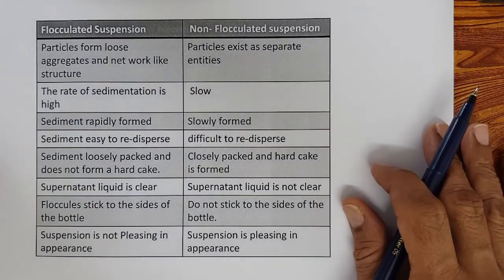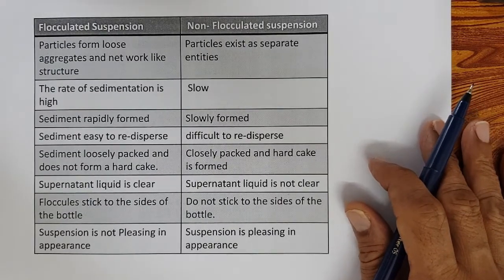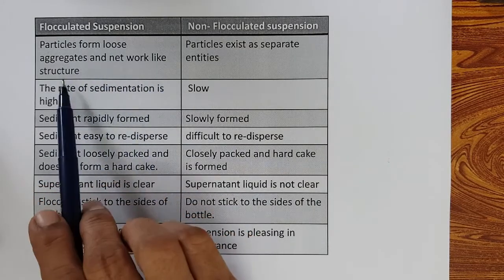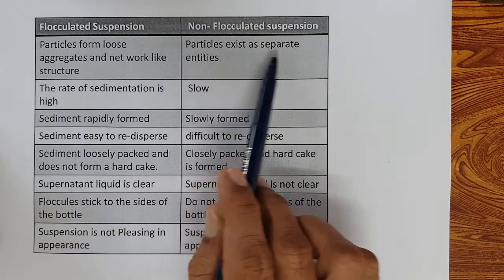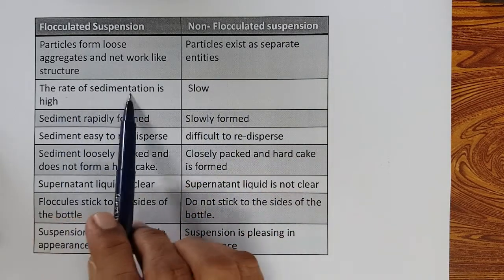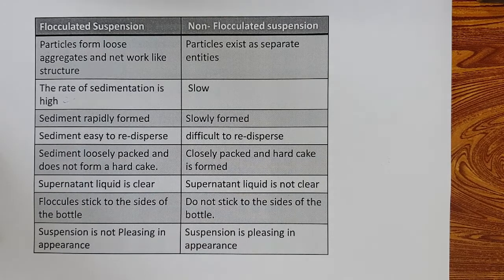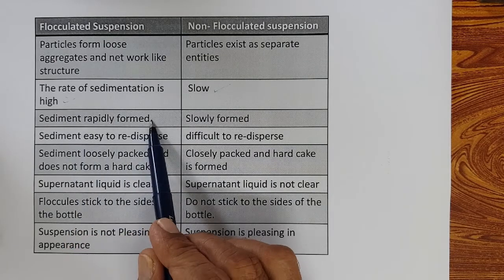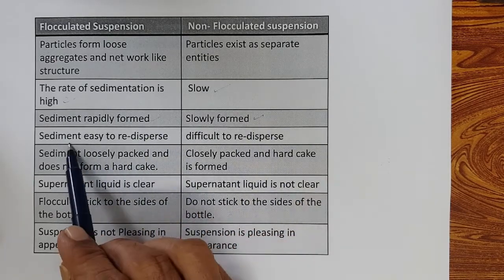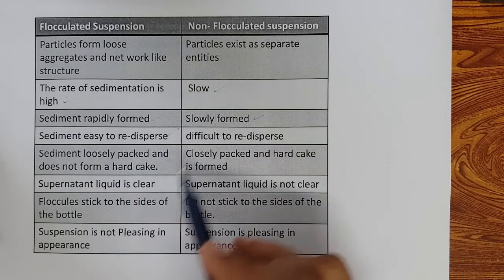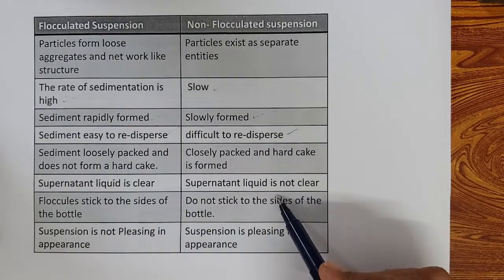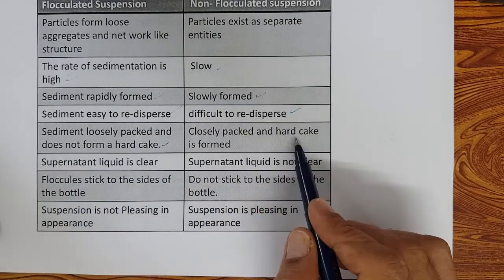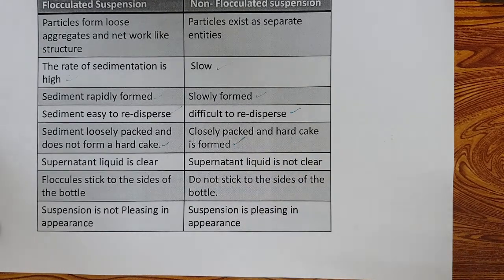Flocculated suspension vs. non-flocculated suspension: in a flocculated suspension, particles form loose aggregates and a network-like structure; in non-flocculated, particles exist as separate entities. Rate of sedimentation is high in flocculated but it is redispersable; rate is slow in non-flocculated. Sediment is rapidly formed in flocculated, slowly formed in non-flocculated. Sediment is easily redispersed in flocculated, difficult to redisperse in non-flocculated. Sediment is loosely packed and does not form a hard cake in flocculated; it is closely packed and a hard cake is formed in non-flocculated.